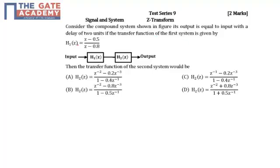H1(z) equals (z - 0.5) divided by (z - 0.8), then we need to find the transfer function of the second system, that is H2(z).